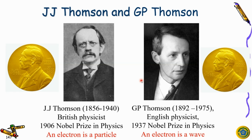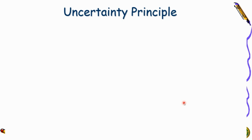J.J. Thomson created the plum pudding atomic model and got a Nobel Prize for discovering that the electron is a particle. Interestingly, almost 30 years later, his son G.P. Thomson got a Nobel Prize for proving that the electron is a wave. So the father proved electron is a particle, and the son proved it is a wave — a very nice story.